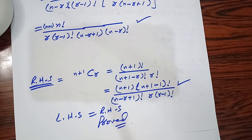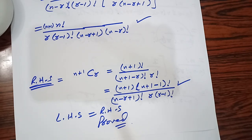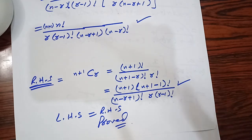I hope aapko 7.4 samajh aayi hogi. Aapne exercise is tarah se karni hai: ek question pehle samjho, video stop karo, phir doosra karo, phir teesra - is tarah se. Iske baad 7.5 se probability start ho jaayegi jo is se thodi easy hai. Chapter ki bas thodi si exercises reh gayi hain, jo bahut short hain.